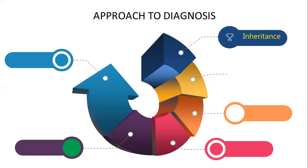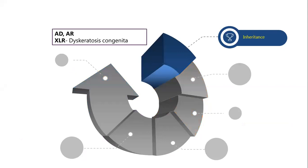For the approach to diagnosis, the method I follow is to give an overview of the disorder and then focus on a few important common conditions. The first thing you should look at is inheritance. Most of the disorders are autosomal dominant or autosomal recessive, except a few X-linked disorders, including dyskeratosis congenita and X-linked reticulate pigmentation disorder.